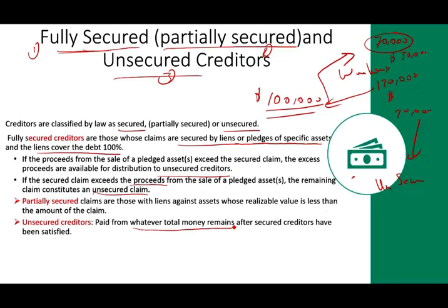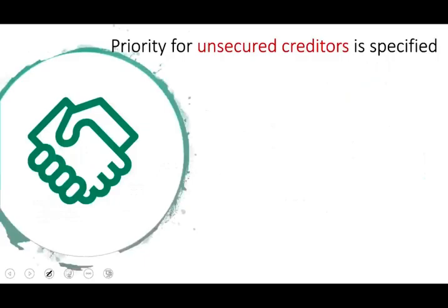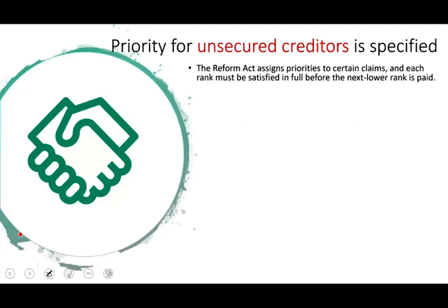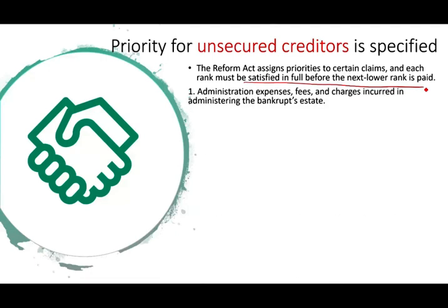Assuming money remains for the unsecured creditors, there is a priority order. The Reform Act assigns priority to certain claims, and each rank must be satisfied before the next rank is paid. First to be paid are the administration expenses — the lawyers, accountants, CPAs, judges, and fees incurred in administering the bankruptcy estate — because they are doing the work.